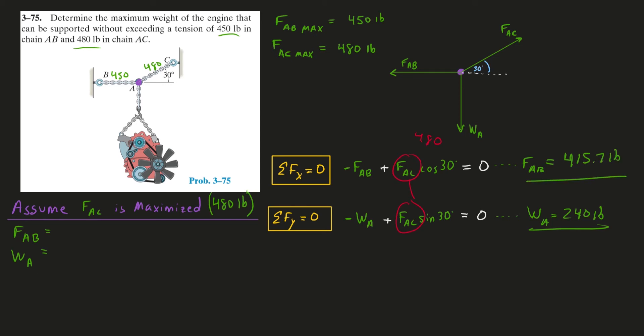All right, so if we allow force AC to be working at its absolute hardest, that results in force AB at 415. And that's okay. Force AB is allowed to safely operate at a max of 450. So this situation is okay.